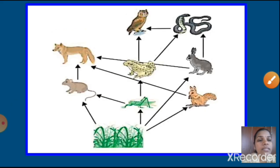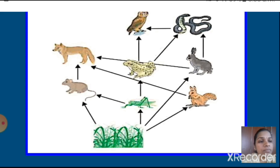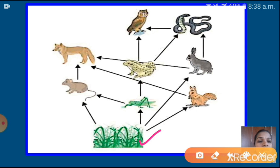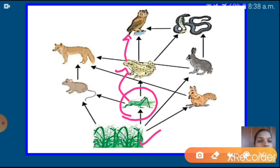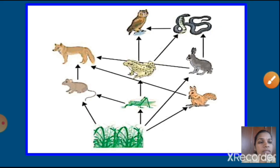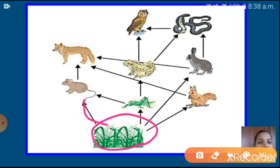See here — there are five food chains. This one is producers. Grasshopper is getting energy from producers, and this grasshopper is eaten by this frog, and this frog is eaten by this owl. Another food chain: plants, then mice, and this mice is eaten by fox. Many food chains are interconnected — so we can say this is the food web.